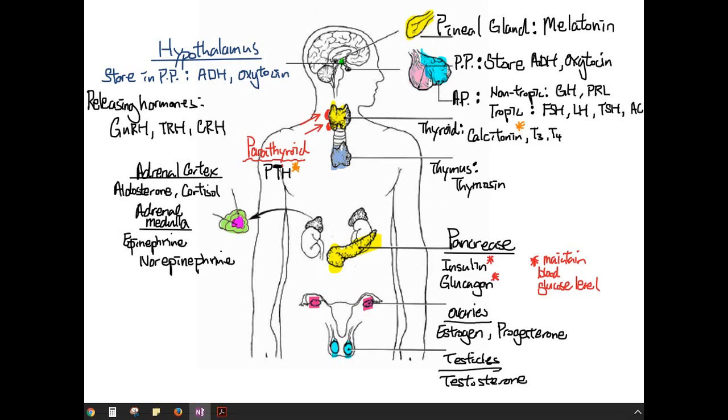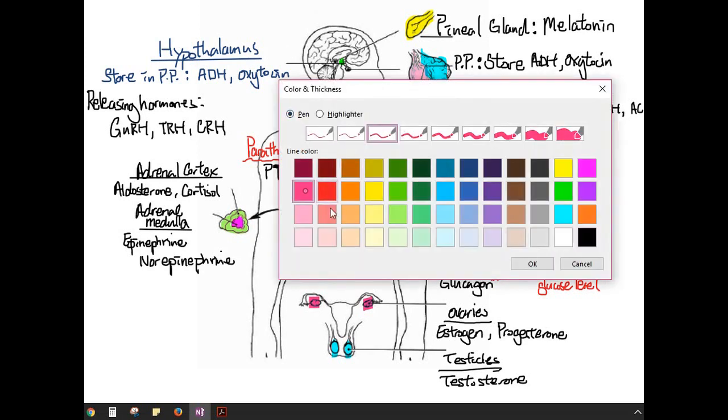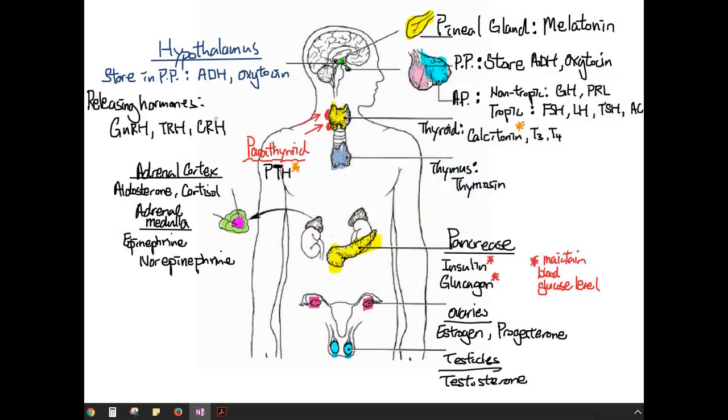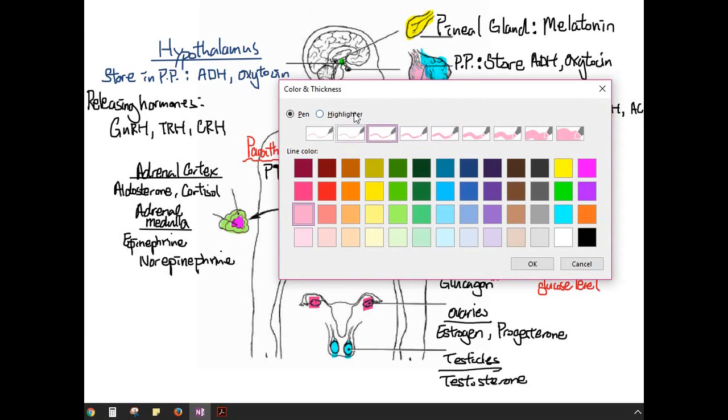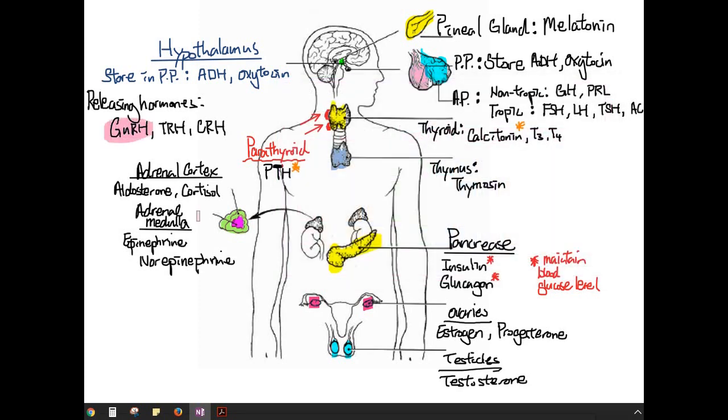Now, just one last thing. I want you to take out your highlighter, different colors, and I want you to do the following. Or you can just watch and do it later. So first, I am going to highlight GnRH. And over here, I am going to highlight FSH LH, and I am going to highlight estrogen progesterone, and testosterone.